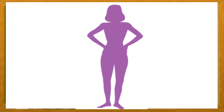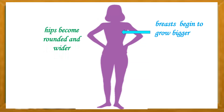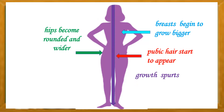The changes in girls: girls can observe that the breasts begin to grow bigger, and the hips become rounded and wider. Pubic hair starts to appear, and after several months the breasts continue to develop. Girls also observe growth spurts as they are growing faster.